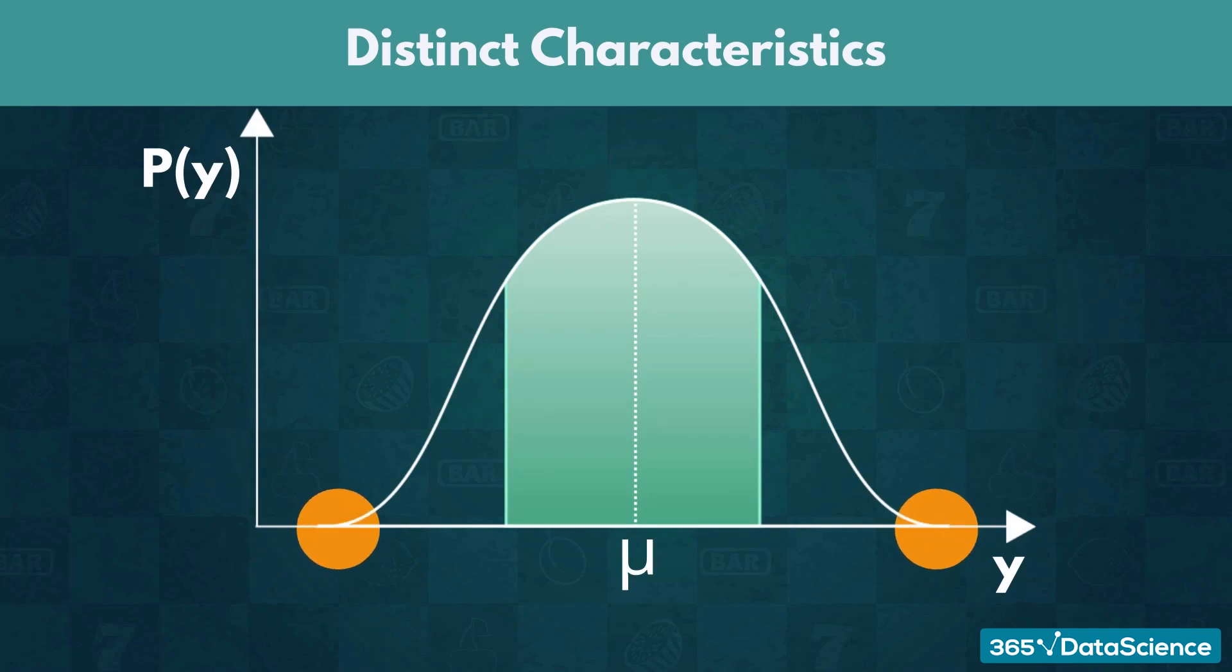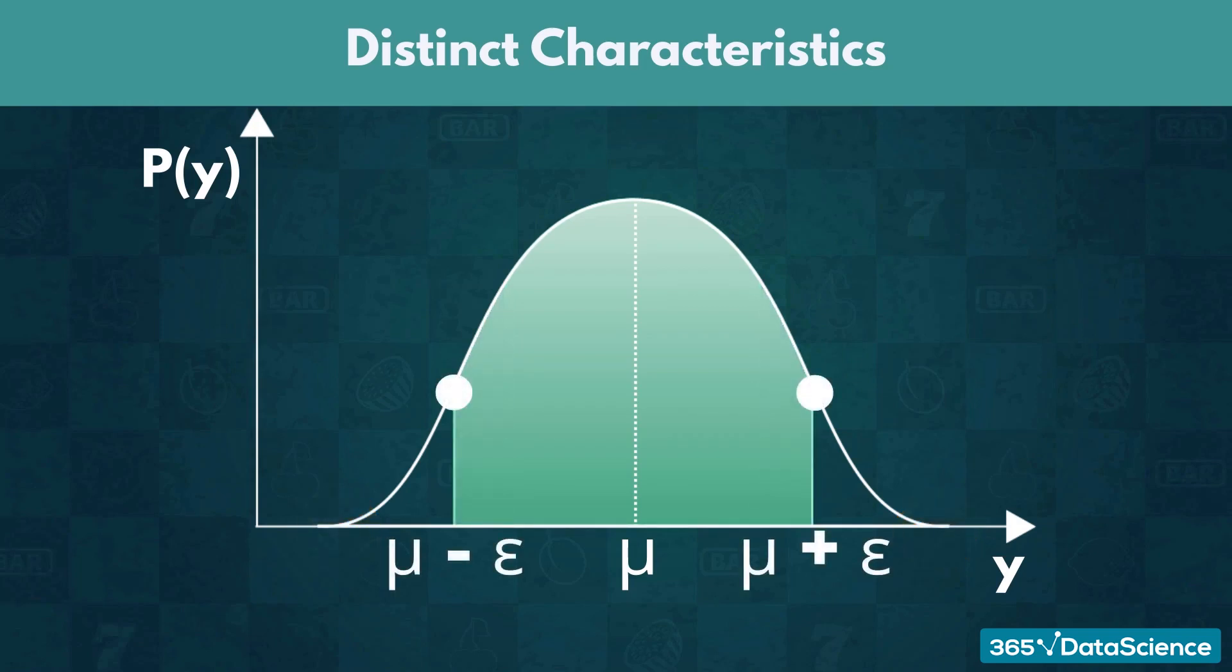Thus, values further away from the mean are less likely to occur. Furthermore, we can see that the graph is symmetric with regards to the mean.